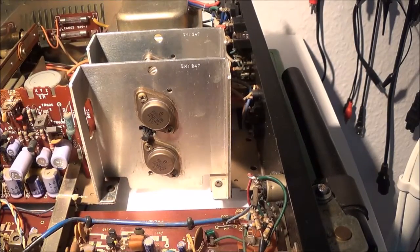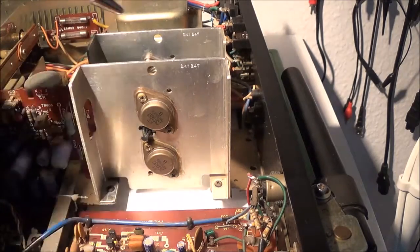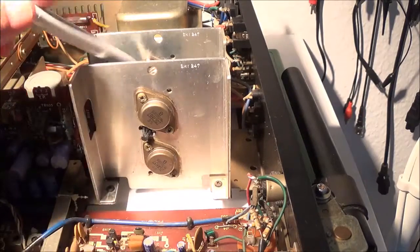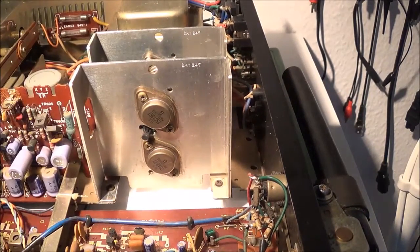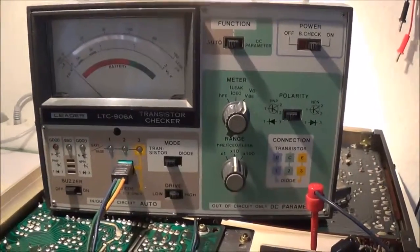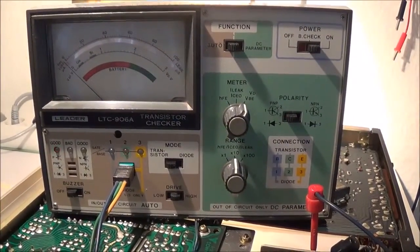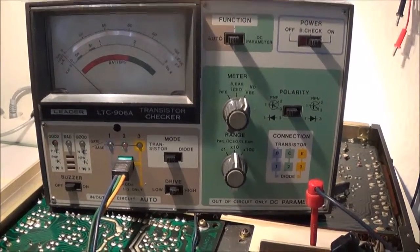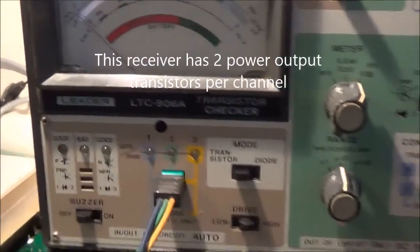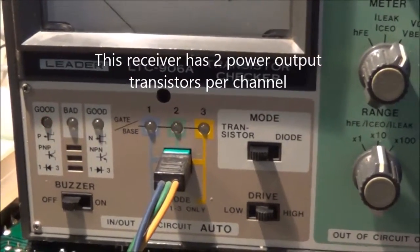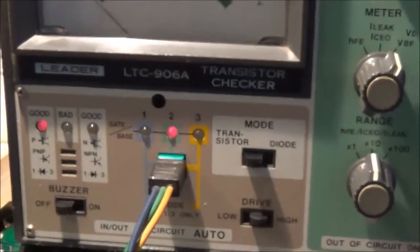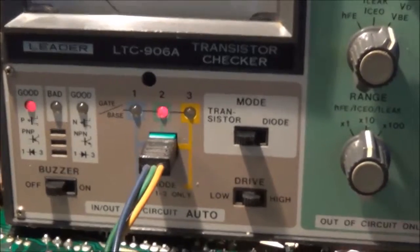I'm going to check the power output transistors in circuit. There's four of them: one, two, three, and four. Now I hooked up my Leader transistor tester to one of the power output transistors. This is what I got. You can do an in-circuit test with this piece of equipment, just a basic go/no-go test.